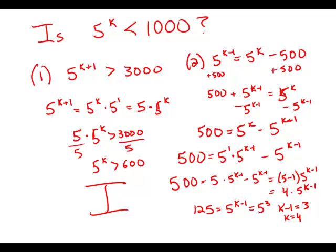And 5 to the fourth is 625, which is less than 1,000. So we did a lot of solving here just to show that it is possible. But this statement is sufficient.